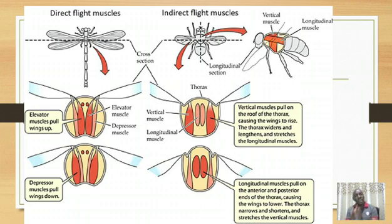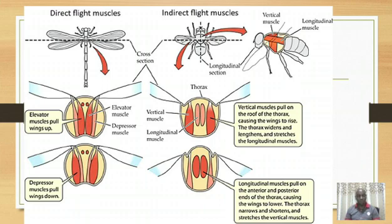Then we have the indirect flight muscles. Why are we calling them indirect? Because they bring about movement of the wing indirectly. In other words, they are not attached to the wings directly. So where do they attach? They attach to the roof of the thorax, which we call the tergum of the thorax. So when they bring about movement of the thorax, it equally brings about movement of the wings. That is why we call them indirect flight muscles.